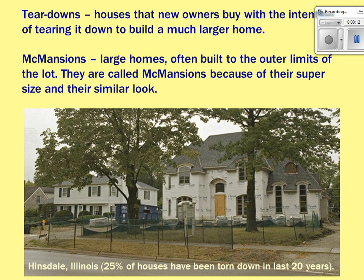Another term seen in core cities, especially in Atlanta, is the McMansion. You'll see traditional houses in old neighborhoods and right next door, a much larger, modern home that doesn't fit the neighborhood's character — that's a McMansion. People don't always like it because it changes the look and character of the neighborhood, but it happens when people want a larger house close to downtown and tear down the smaller one to build it.